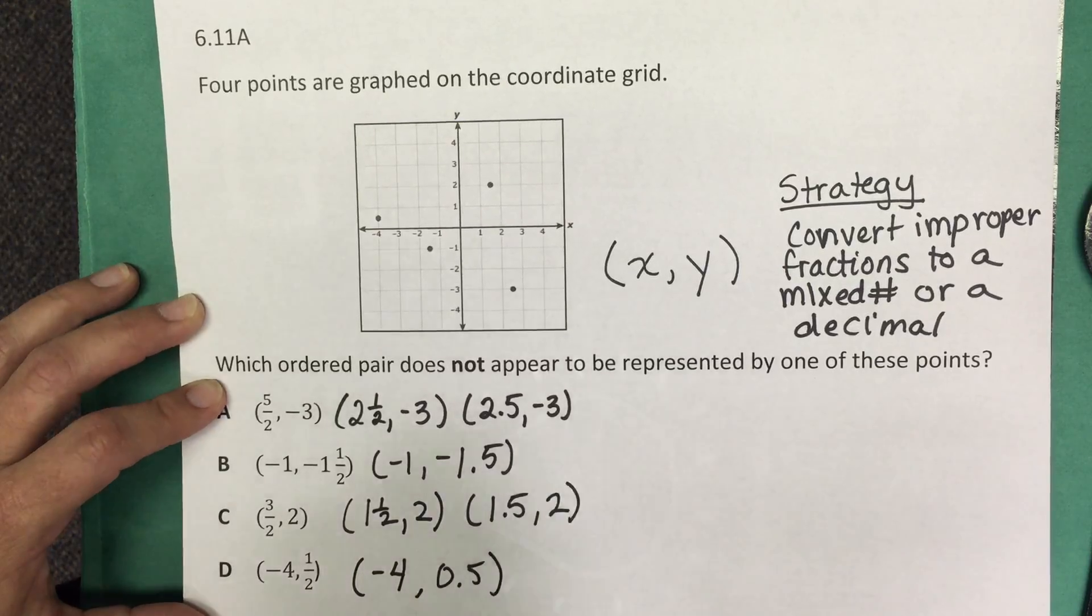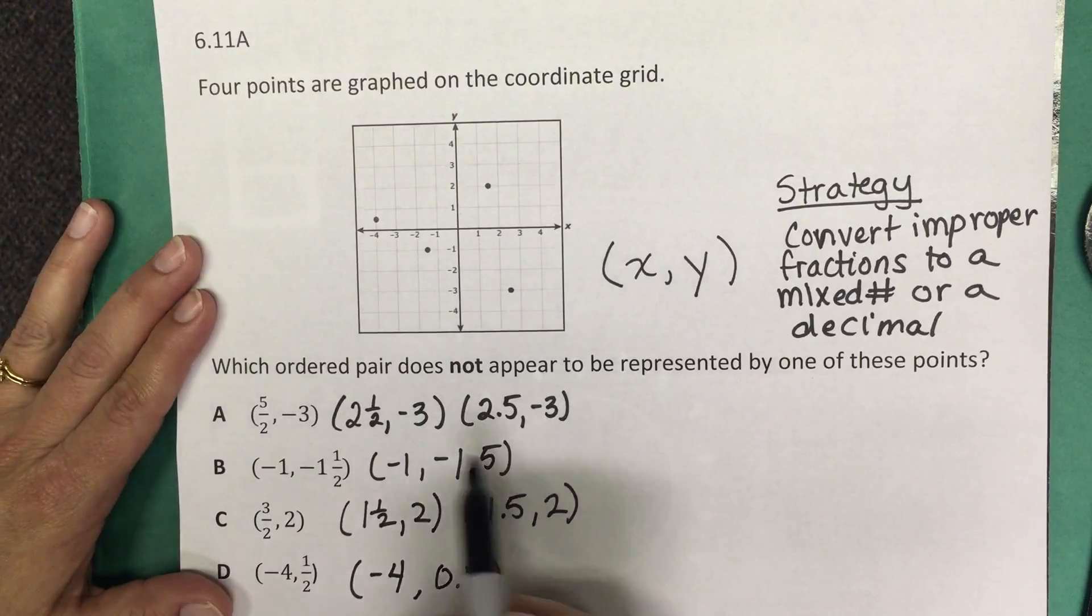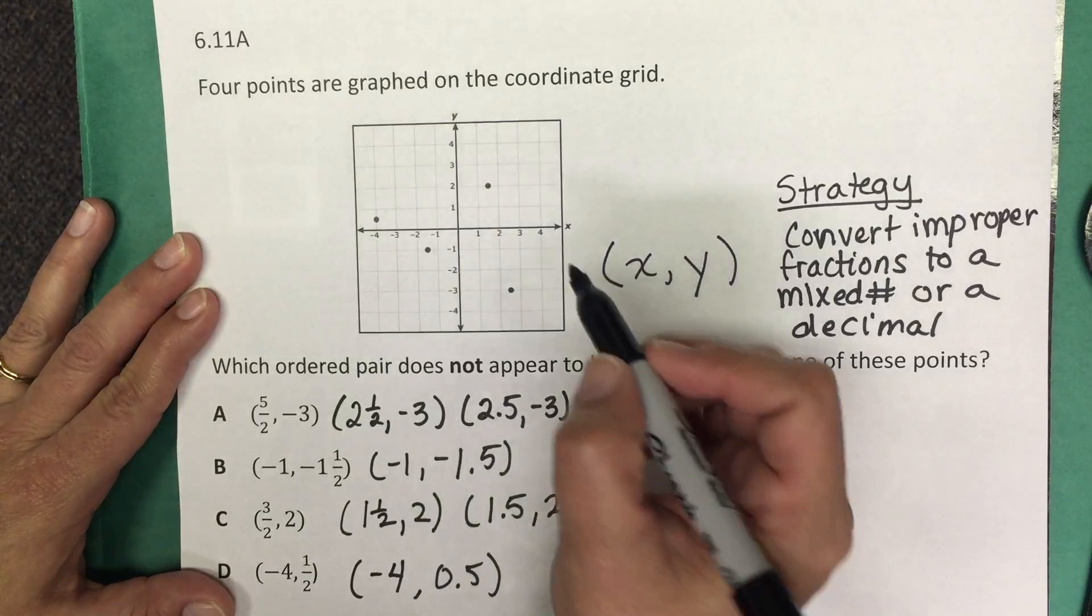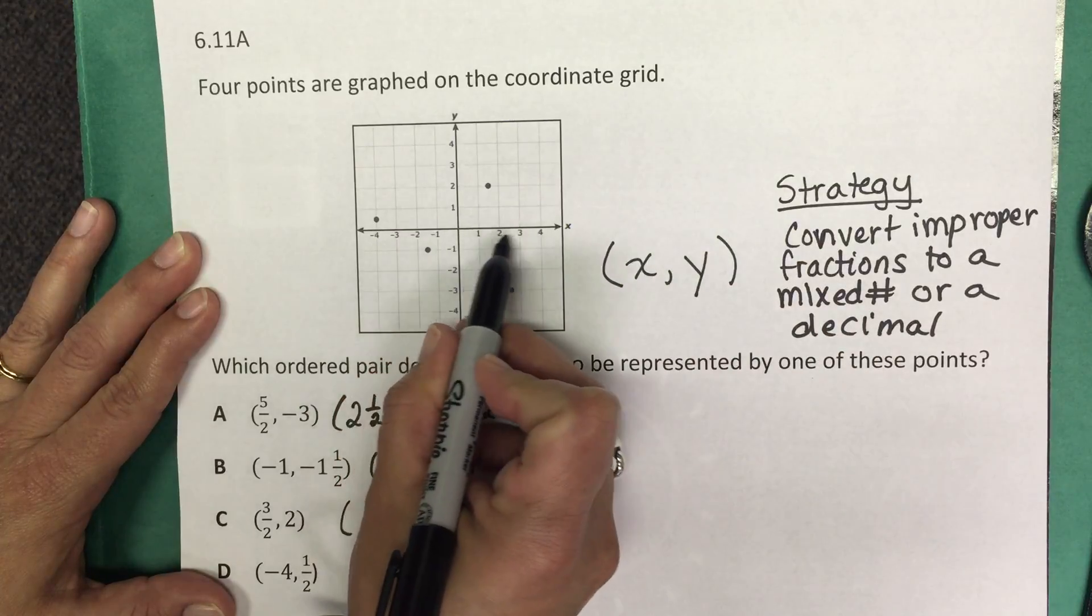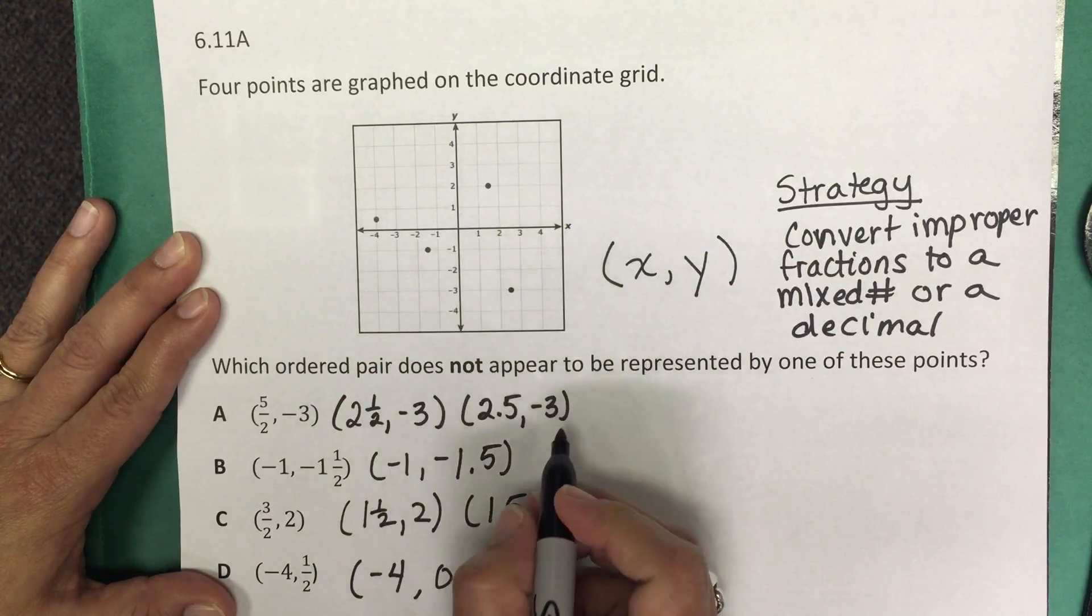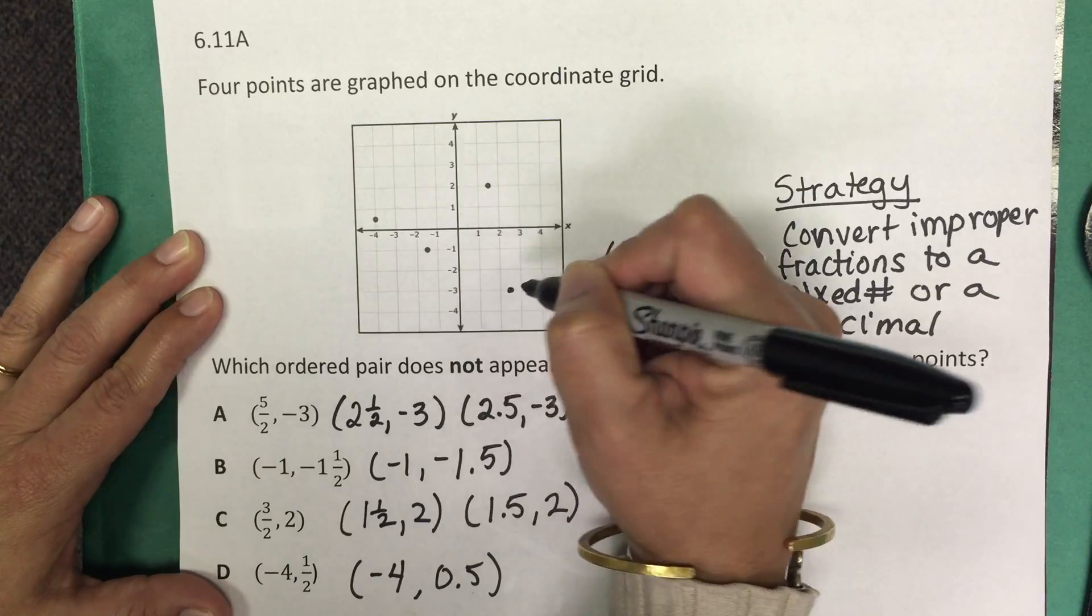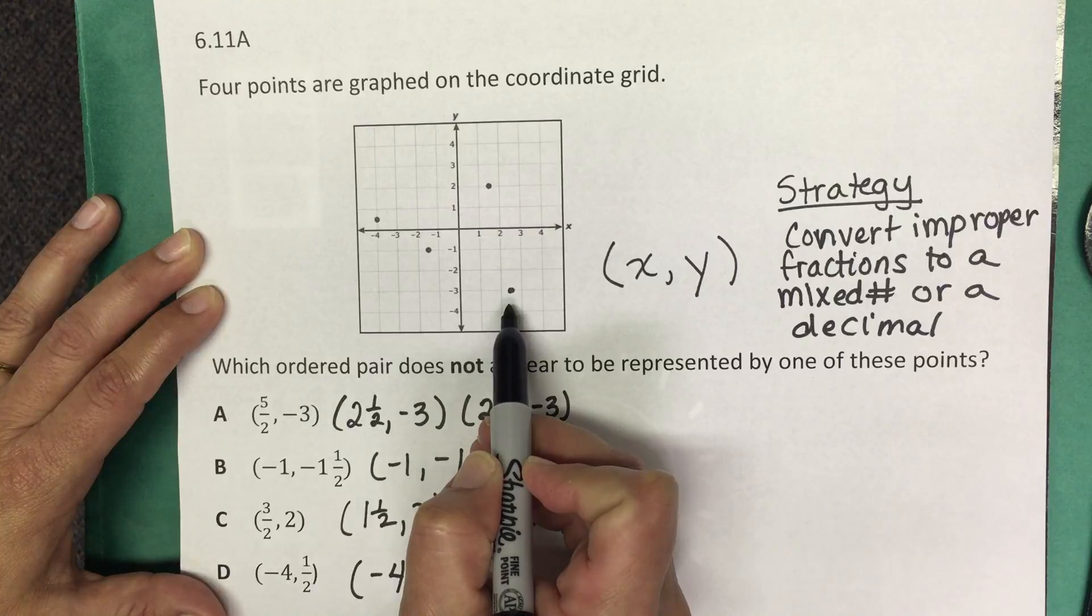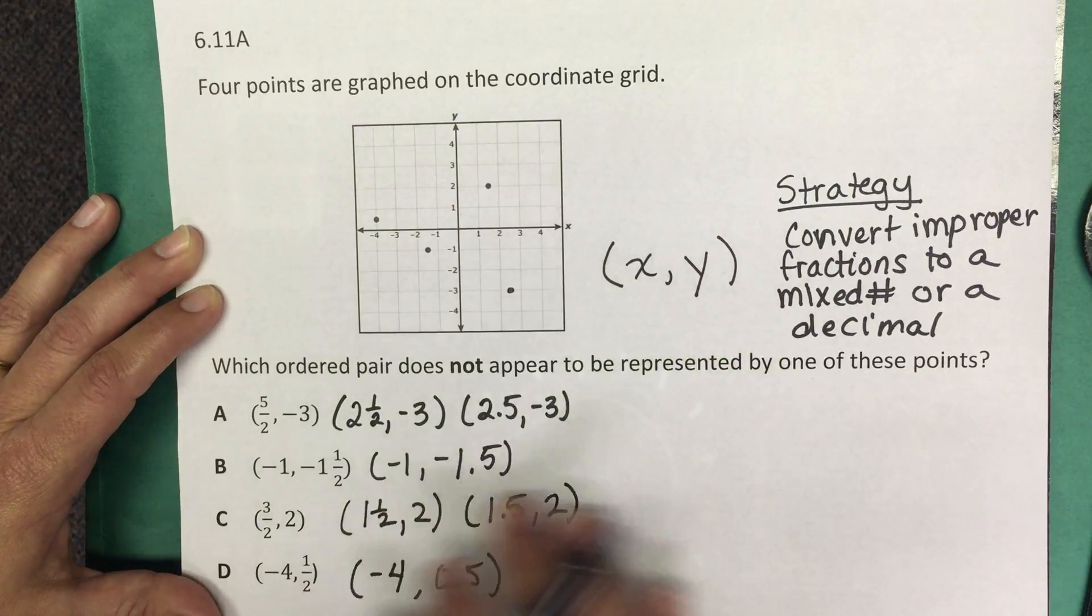So let's go ahead and graph these points. So five halves, negative three, or 2.5 and negative three, means we would move two and a half units in the positive x direction, then three down in the y direction. And when we do that, we see that we land right on this point here. And we're looking for the point that's not represented by these answer choices.